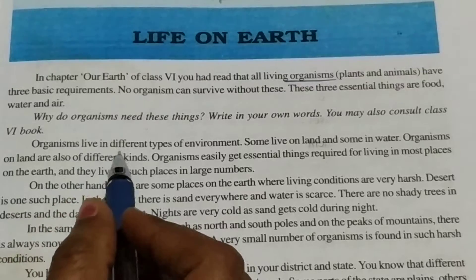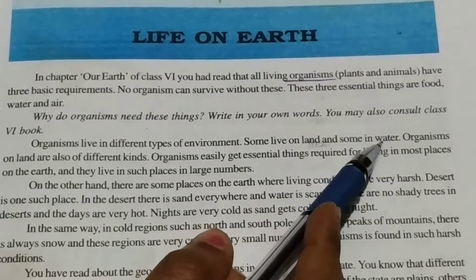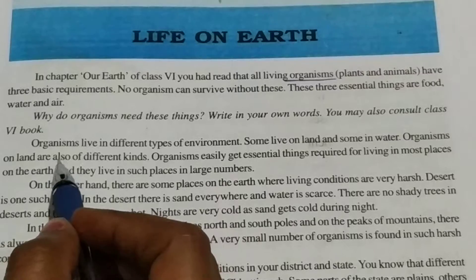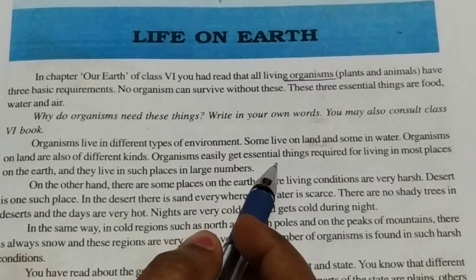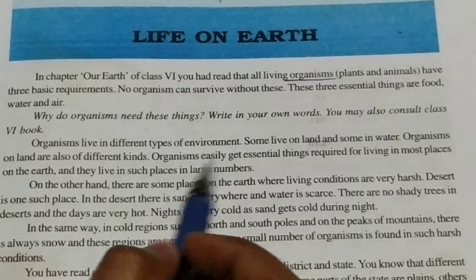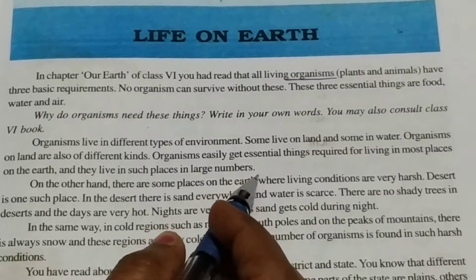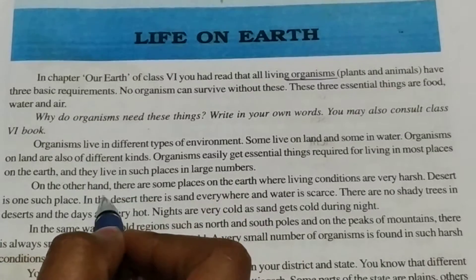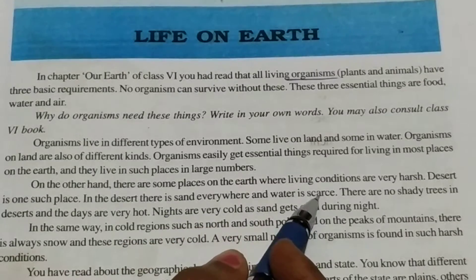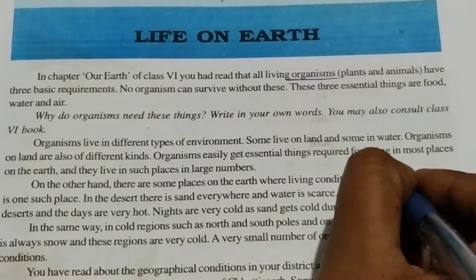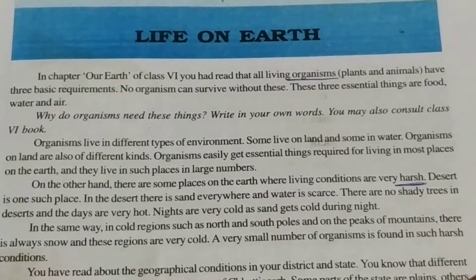Organisms live in different types of environment. Some live on land and some in water. Organisms on land are also of different kinds. Organisms easily get essential things required for living in most places on the earth, and they live in such places in large numbers. On the other hand, there are some places on the earth where living conditions are very harsh — underline that word — harsh means hard.